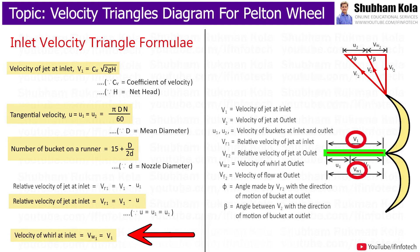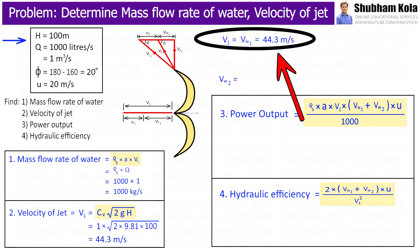In previous video, we have already seen for pelton wheel turbine, the velocity of jet at inlet V1 equals velocity of wheel at inlet VW1, which we have already calculated.